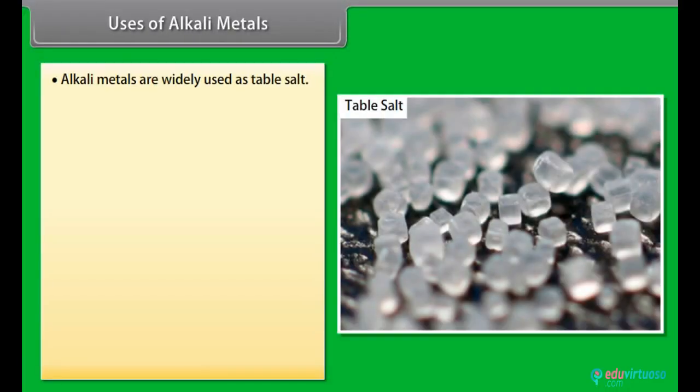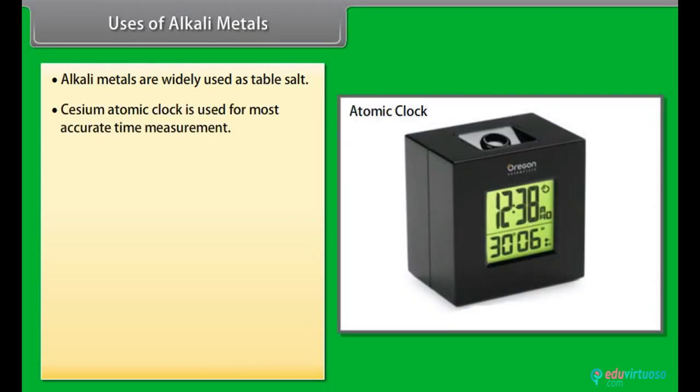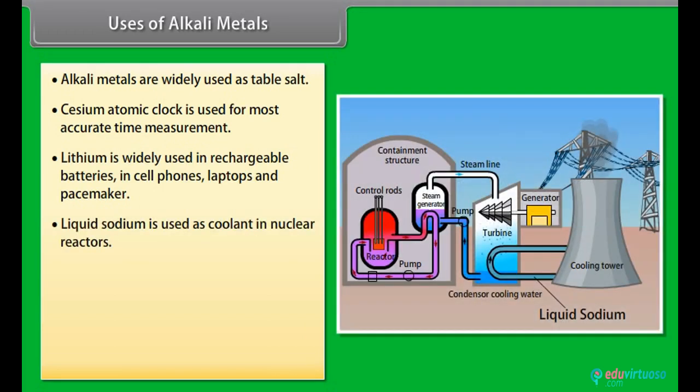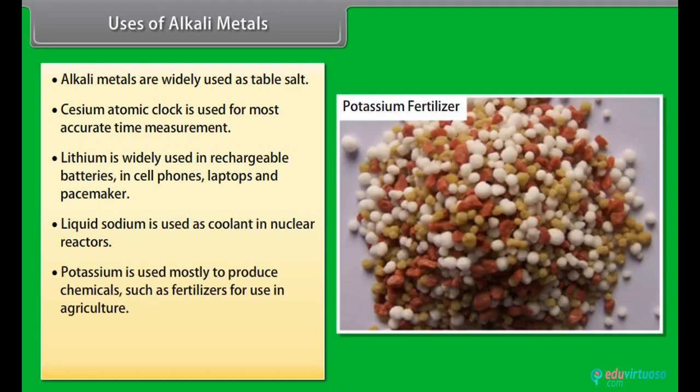Uses of alkali metals: alkali metals are widely used as stable salts. Cesium atomic clocks are used for most accurate time measurement. Lithium is widely used in rechargeable batteries in cell phones, laptops, and pacemakers. Liquid sodium is used as coolant in nuclear reactors. Potassium is used mostly to produce chemicals such as fertilizers for use in agriculture.